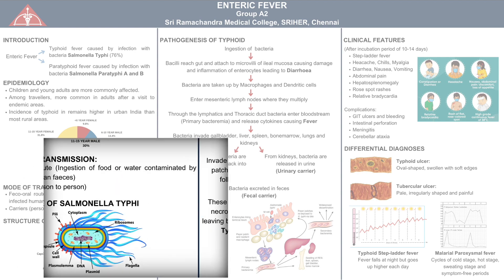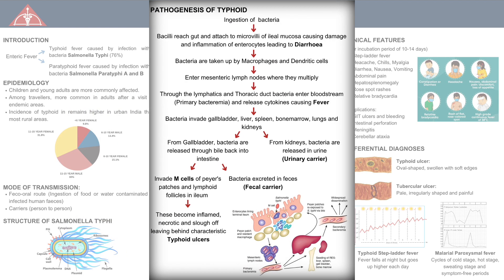It is a facultative anaerobe. When a person ingests bacteria present in contaminated food, the bacilli reach the gut and attach to microvilli of ileal mucosa, causing damage and inflammation of enterocytes and diarrhea. These bacteria are then taken up by macrophages and dendritic cells and travel to the mesenteric lymph nodes where they multiply. The bacilli travel through the lymphatics and the thoracic duct to enter the bloodstream, where they release cytokines causing fever.